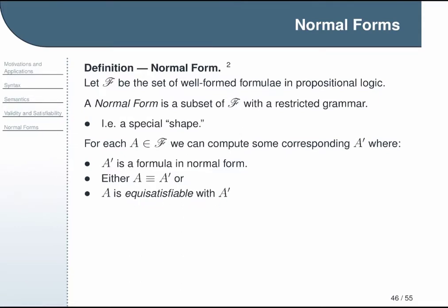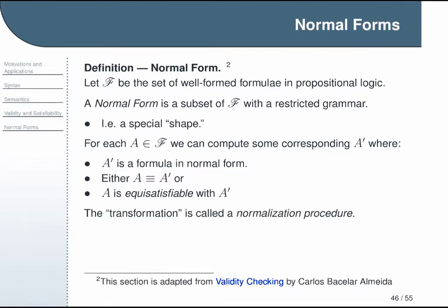We'll discuss equisatisfiability a bit later on, but the quick gloss is that it means A is satisfiable if and only if A' is satisfiable. Finally, there's some process for computing A' from A or you can think of it as transforming A into A', and this is called a normalization procedure.